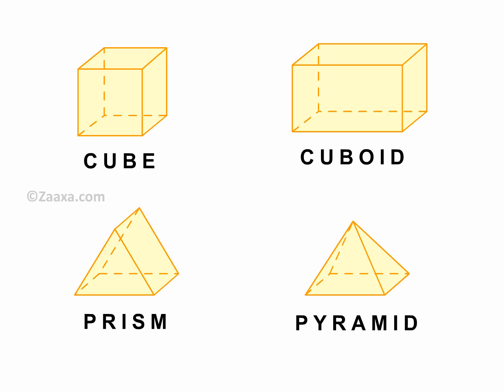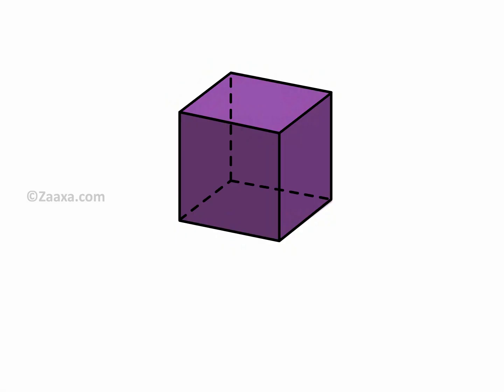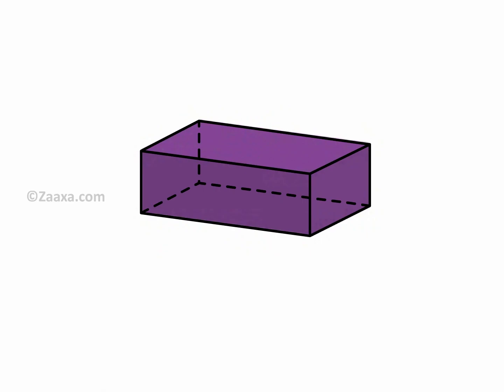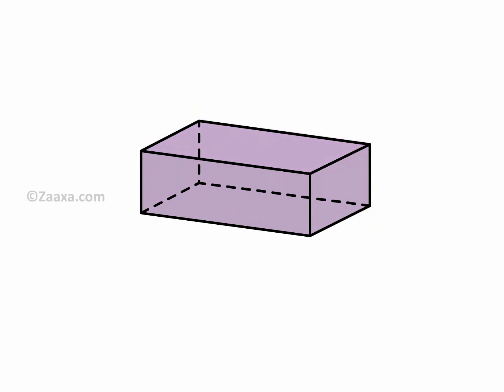Let us now take a look at how we draw a cube, cuboid, prism, and pyramid. This is a cube. It is made up of six square faces. This is how we represent it from the angle at which we are viewing it now. This is a cuboid. It's made up of six rectangular faces. This is how we represent it from the angle at which we are viewing it now.